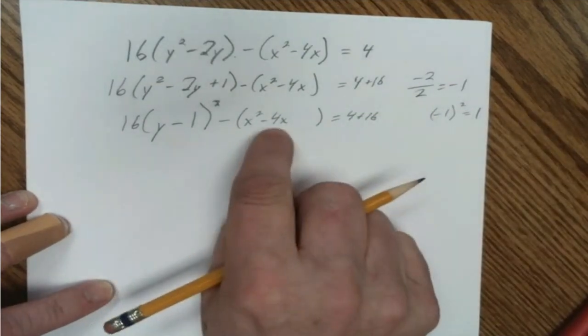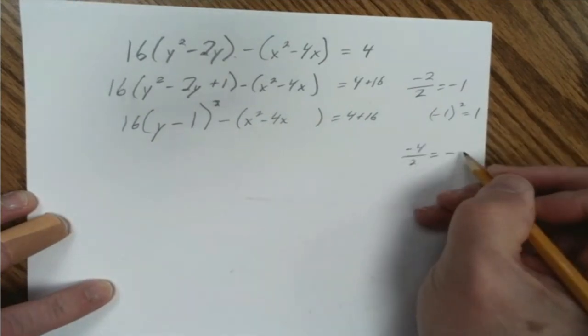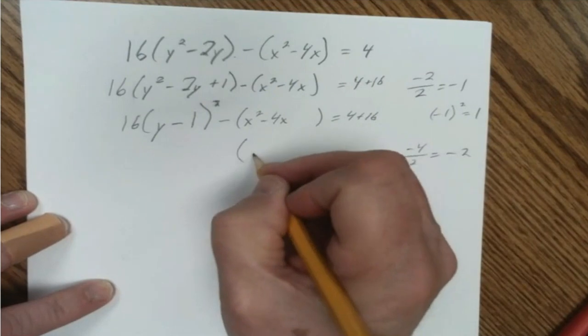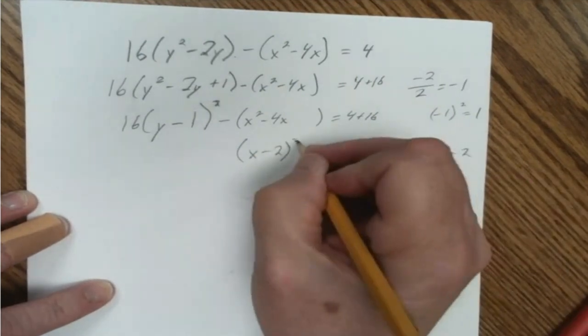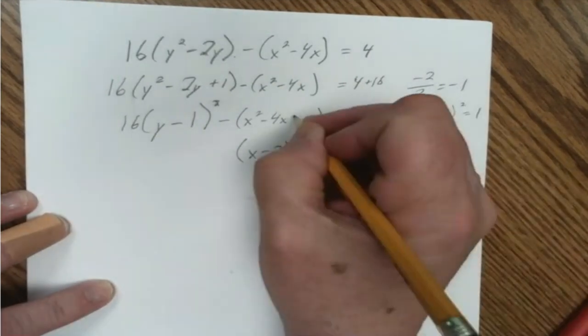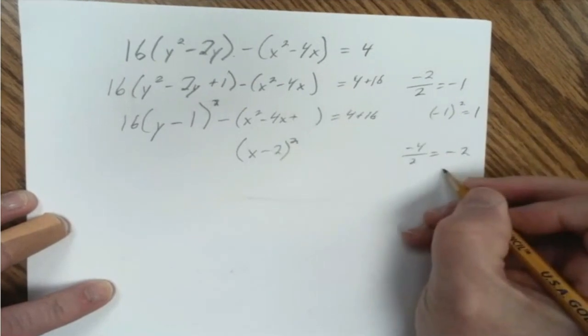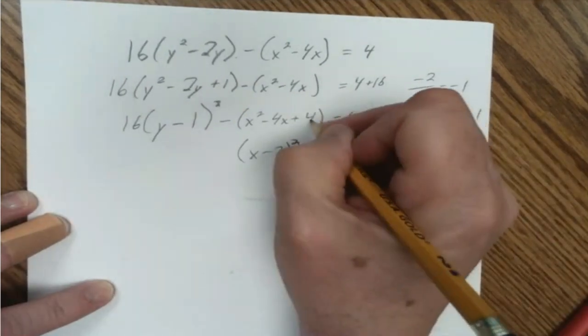So here my coefficient is negative 4, divided by 2, negative 2 is the number that's going to end up here. It's going to be x minus 2 squared, because that is the number I get when I cut that in half. But the number I add on to that is negative 2 squared, which is 4, so I have to add 4.